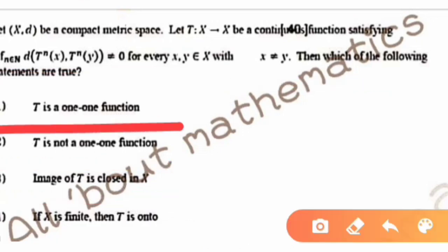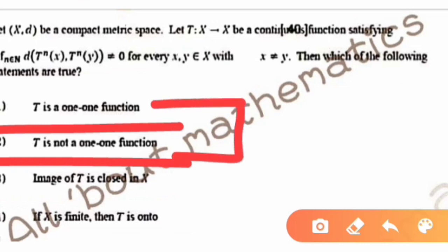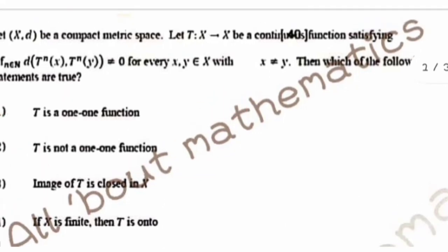First and second statements are contradictory — T is one-one, or T is not one-one. So one of them is definitely correct and one is definitely wrong. If the function is one-one then a certain condition holds. So option B can be discarded if option A holds, and vice versa.